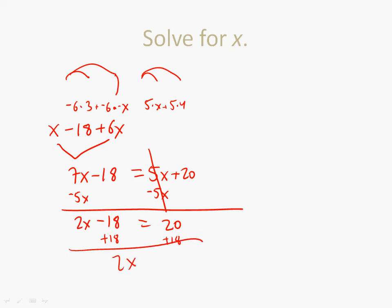2x, that just zeroes out, that's 38, divide by 2 divide by 2, x equals 19.